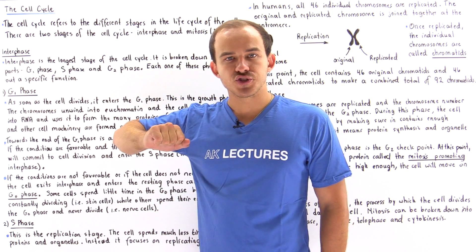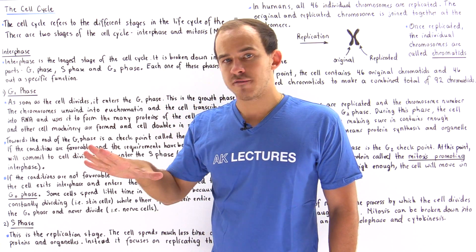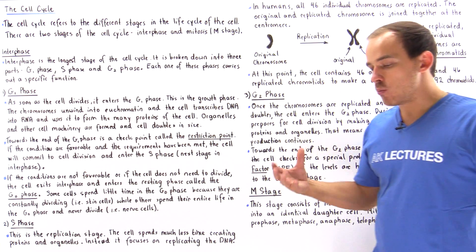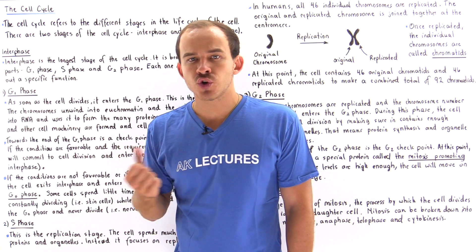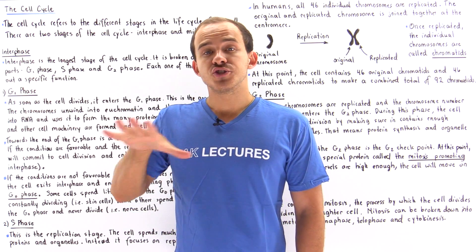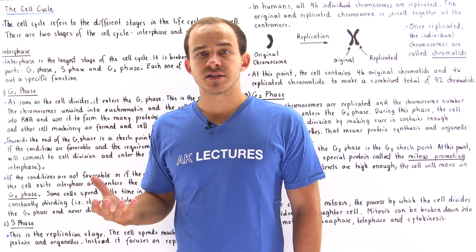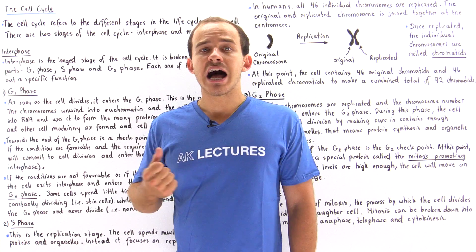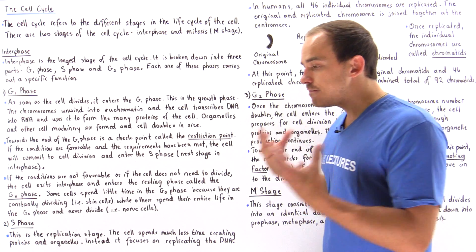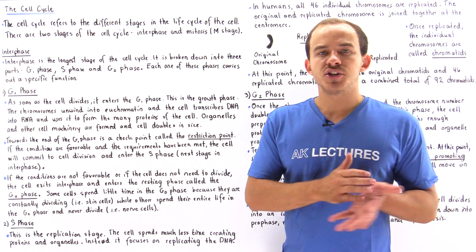Let's begin with the G1 phase. As soon as the cell divides, the cell enters the G1 phase, which is known as the growth phase. In this phase, our chromosome unwinds and uncoils into euchromatin, and the euchromatin is used to produce RNA that is used to synthesize the proteins needed by the cell. Those proteins are used to synthesize the many organelles and different types of cell machinery needed for cell survival. So the G1 phase is where we produce the majority of the organelles and proteins used by the cell.